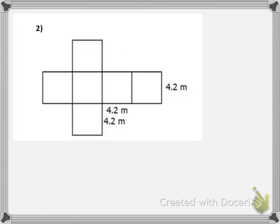Our second one here, again we have a net that folds up into a cube and the side lengths here are 4.2 meters. So we're going to multiply 4.2 times 4.2 and that gives us an area of 17.64 for each square.